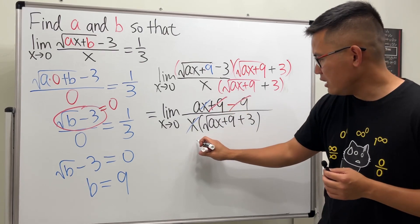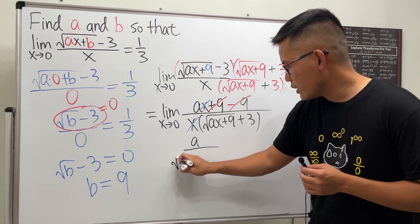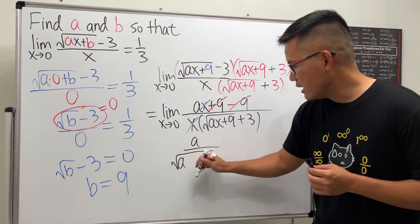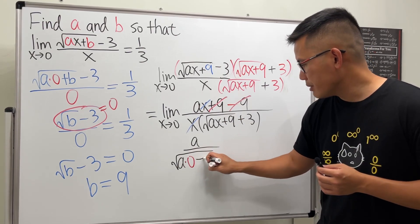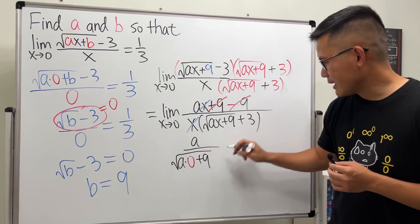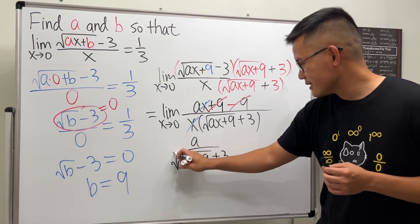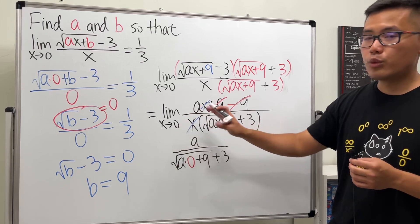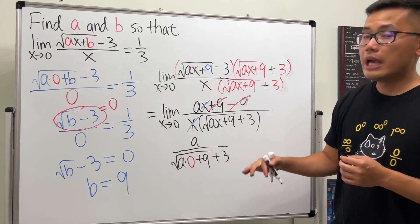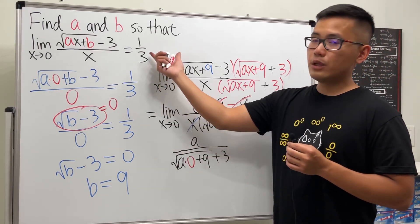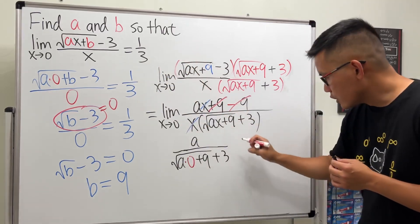And then let's go ahead and plug in zero into this x. No more x on the top, so we will see that we will just get, on the top, it's just a, over—and then we will have square root, and then this is a times zero and then plus nine, and then plus three.